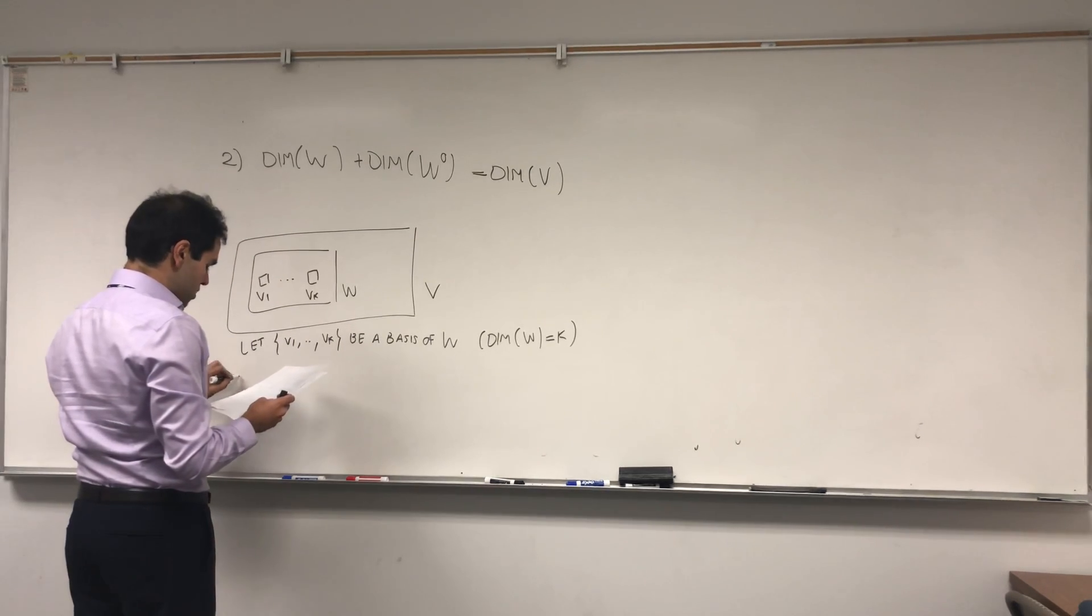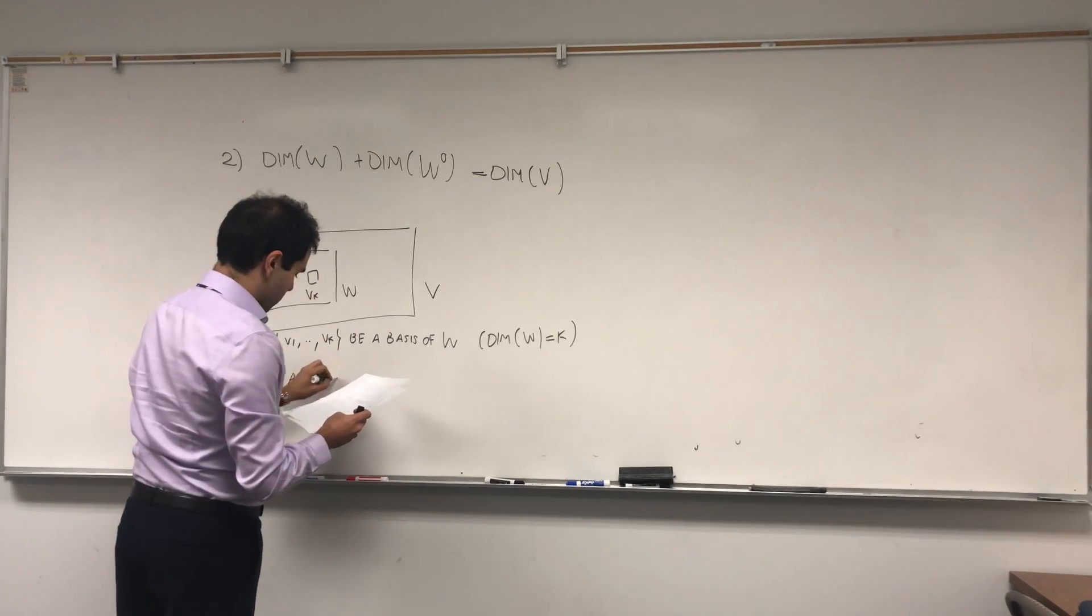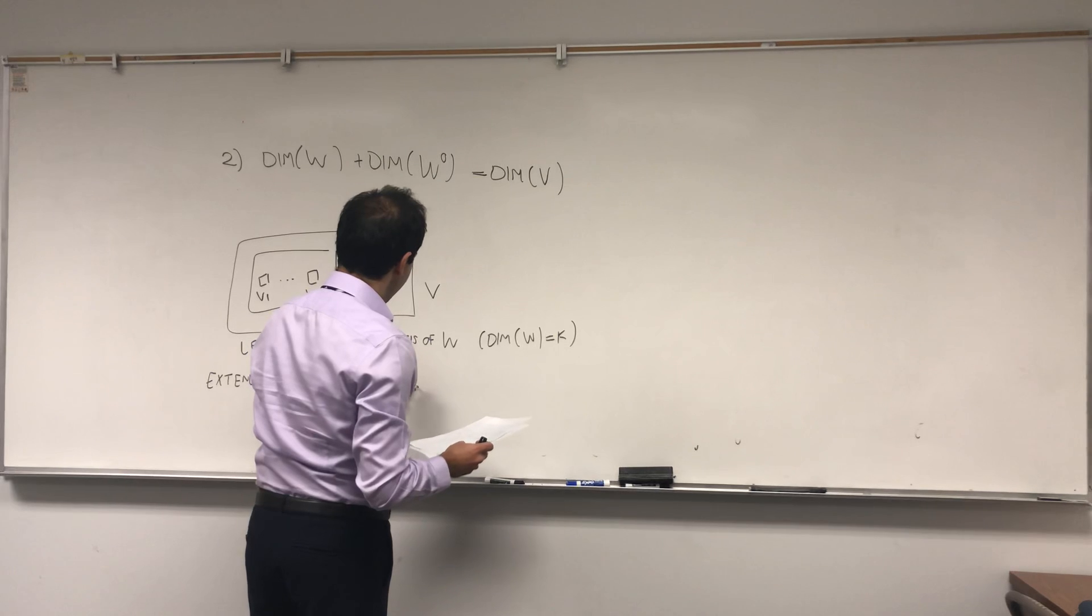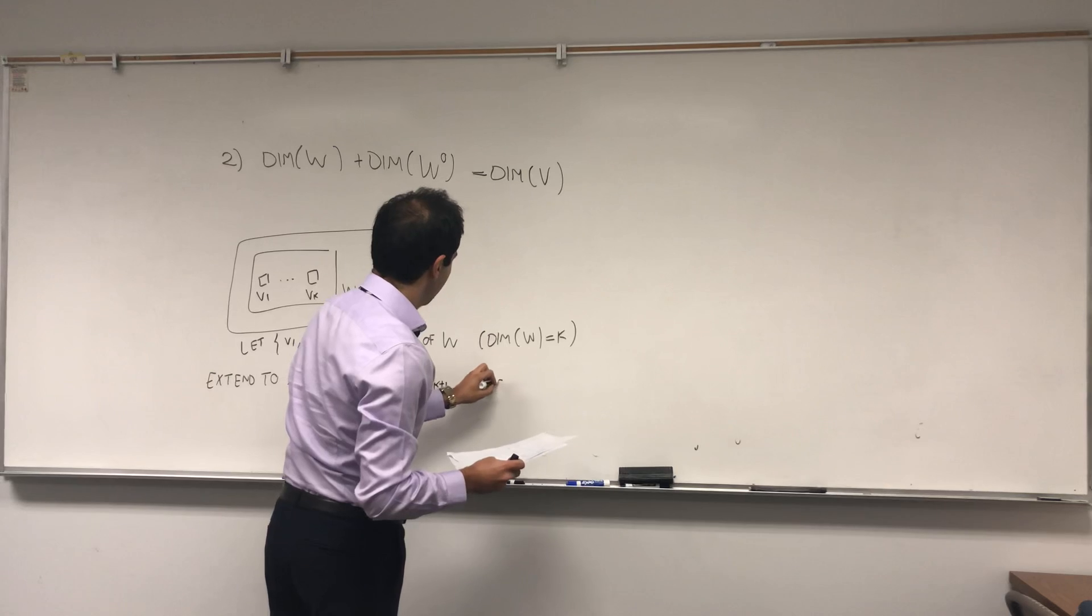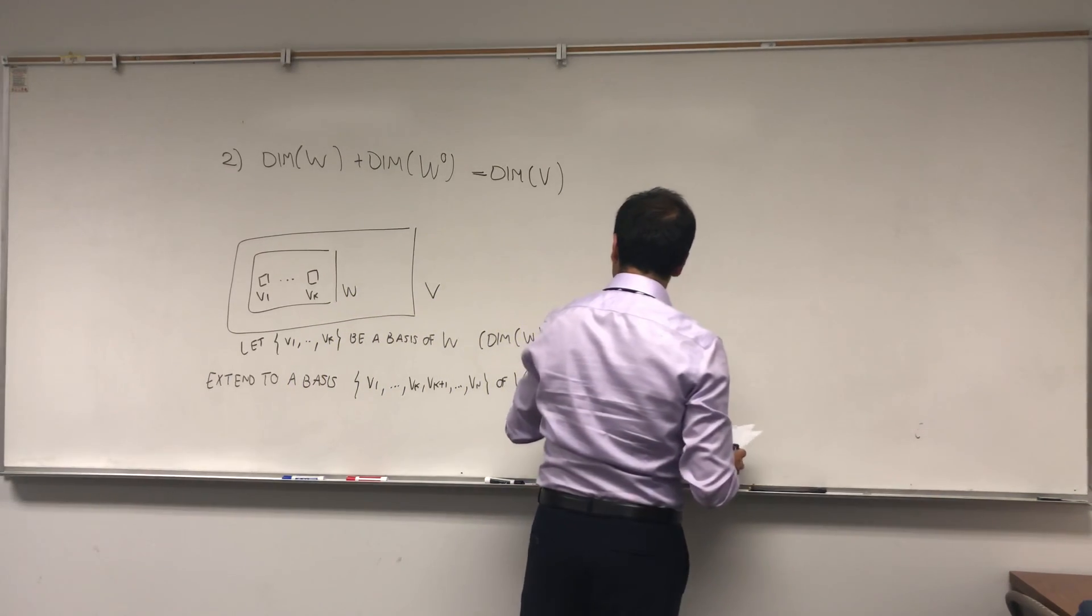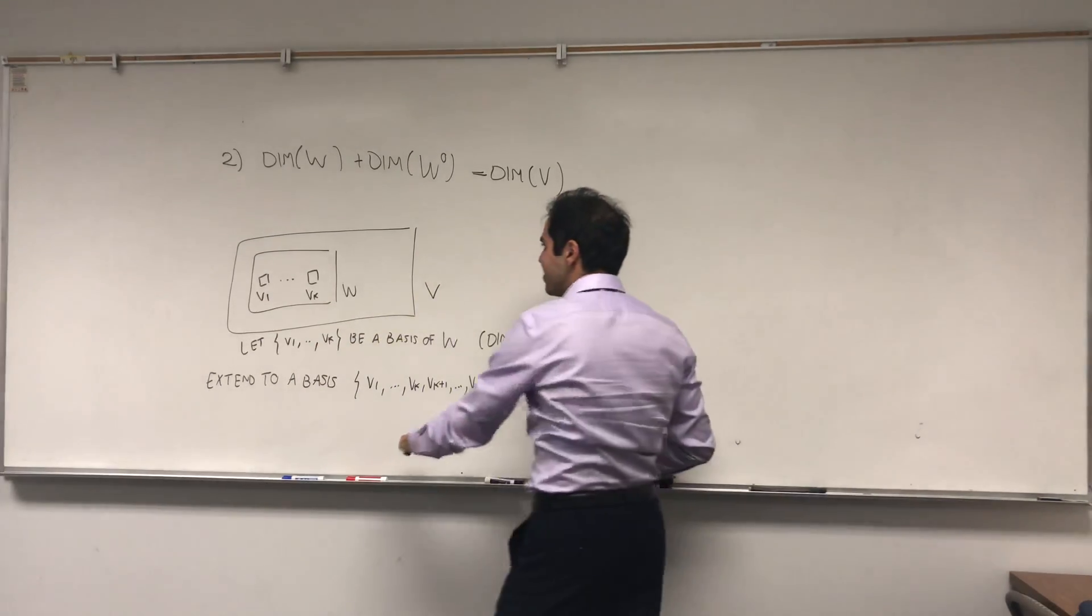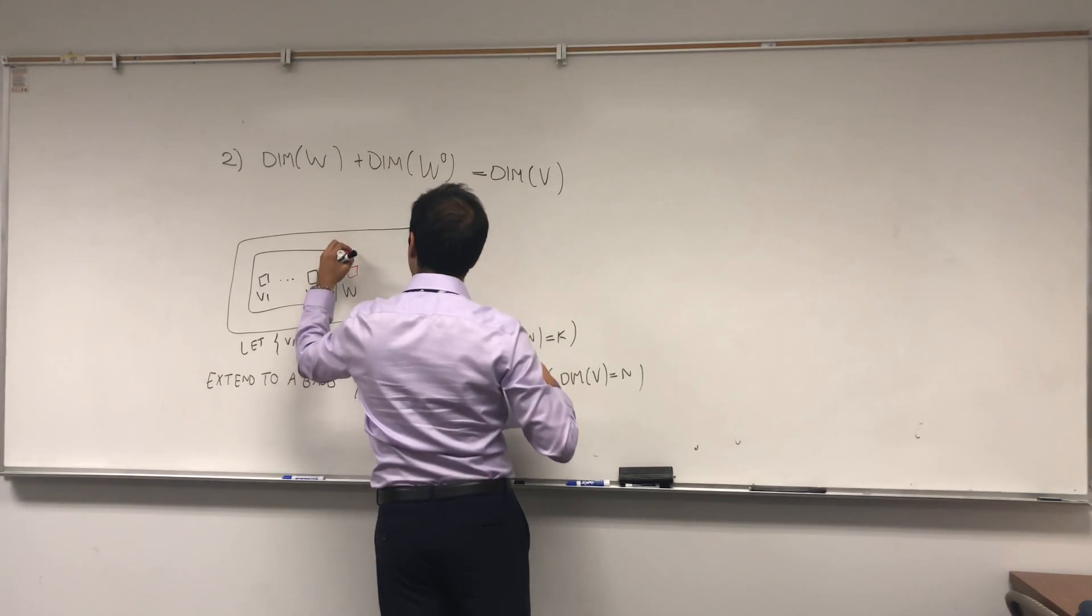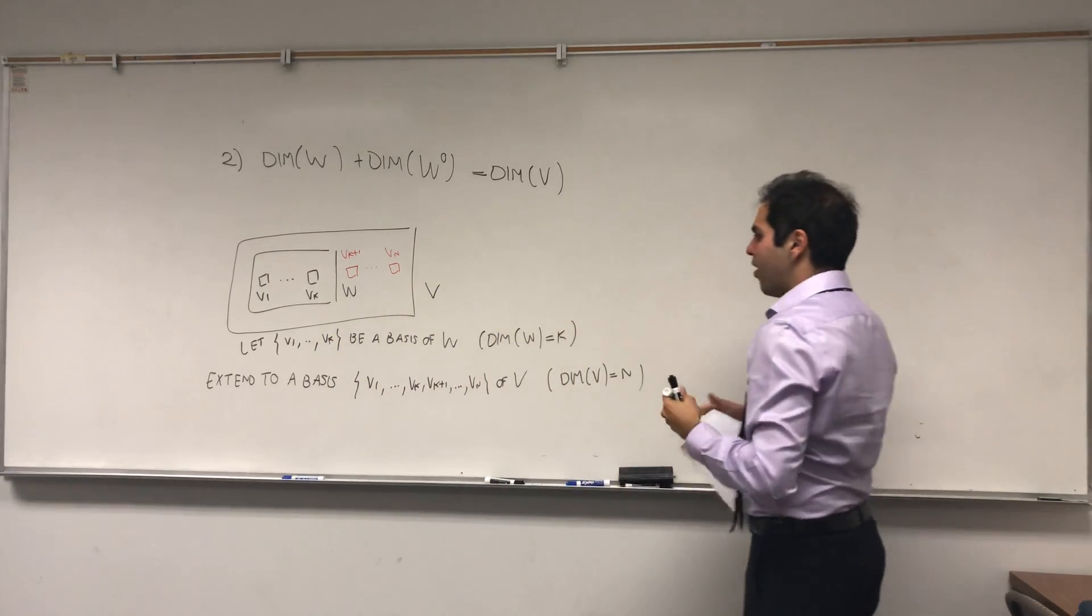So k is the dimension of W, which we'll need. And then remember any basis of a subspace, you can extend it to a basis of the whole space. So extend to a basis v1 dot dot dot vk, vk plus one, dot dot dot up to vn of V, where here the dimension of V is n.